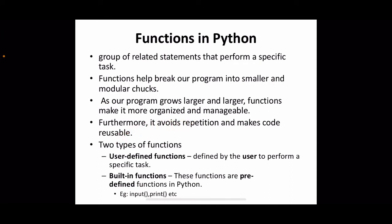There are two different types of functions. The first is user-defined functions, created by the user to perform a specific task. The second is built-in functions, which are predefined functions in the programming language. In Python, we already have a set of predefined functions we can use without defining them — for example, input and print are built-in functions we've already used.